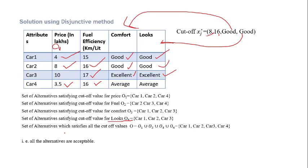The set of alternatives which satisfies at least one attribute is given by the union: O1 ∪ O2 ∪ O3 ∪ O4, which gives car 1, car 2, car 3, and car 4 — all alternatives are acceptable. So the decision maker can go for anyone. This is the drawback of this method — we are not getting a single option as the result. Thank you very much, we will come with another lecture.